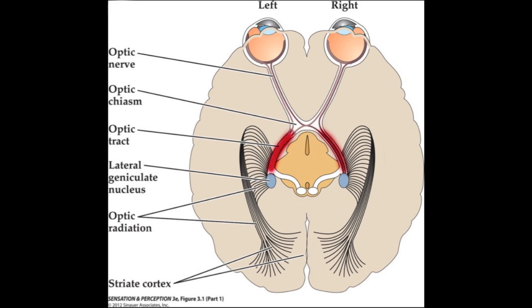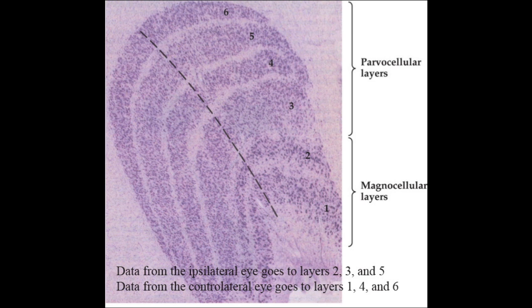From the optic chiasm, the optic track continues to the lateral geniculate nucleus, or LGN, of the thalamus. We can stain neurons in the LGN and see how its structure is layered, with various cells receiving input from the left eye or the right eye. While data from the two eyes are being processed on each side of the LGN, they are still separated into layers — no cells in the LGN are receiving input from both the right and left eyes.